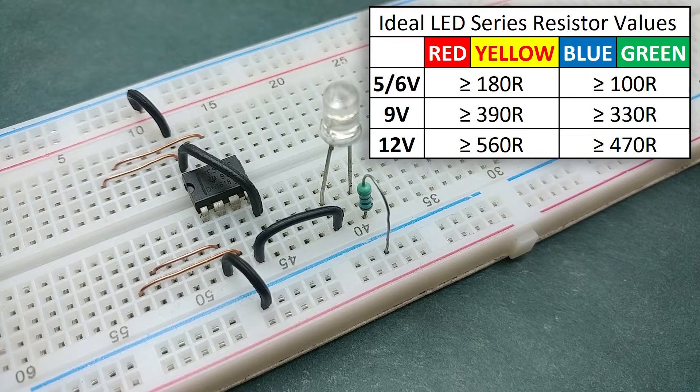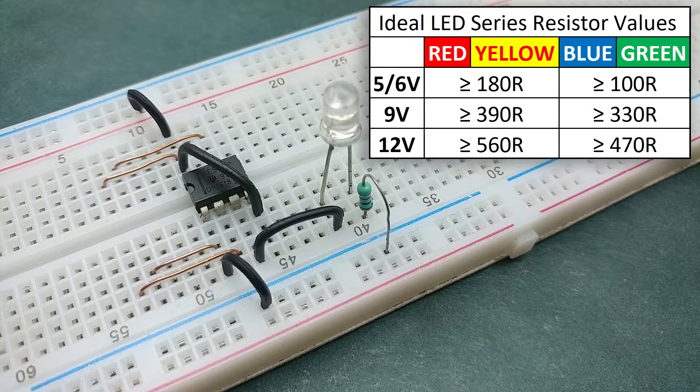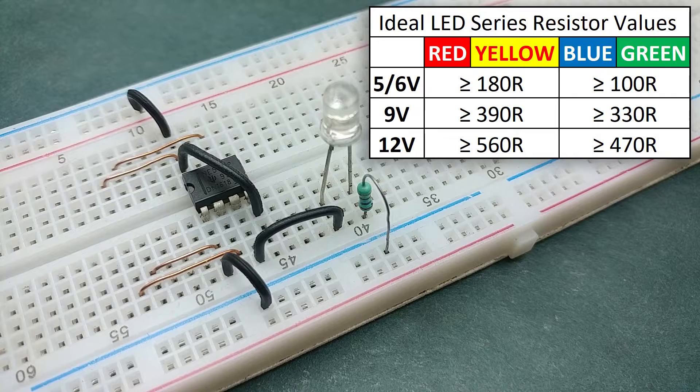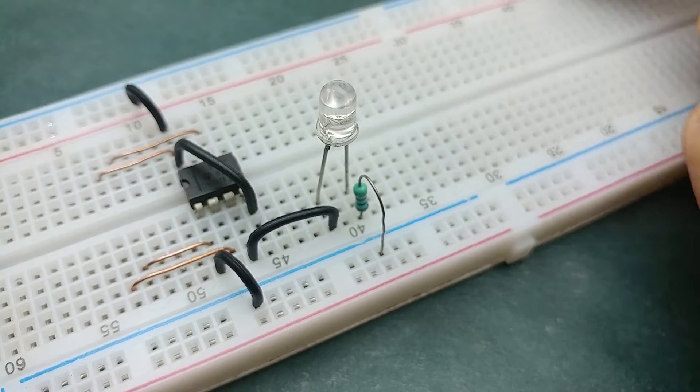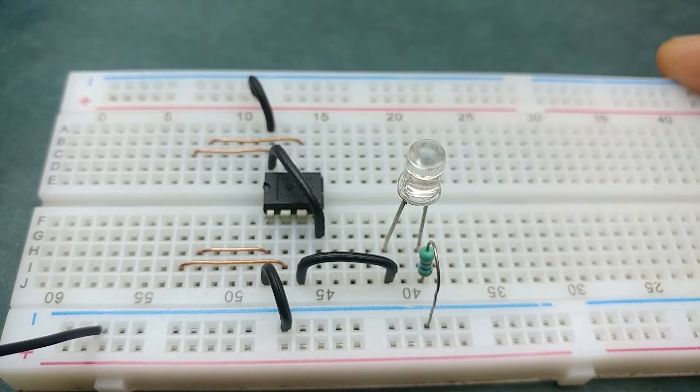The value of this resistor depends on the voltage of power supply you use and the color of LED you're using. This table gives you the corresponding value. Now connect the power supply and the circuit is now ready.